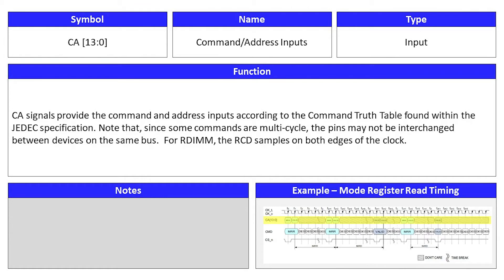Command and address inputs are an input signal and its symbol is CA. CA signals provide the command and address inputs according to the command truth table found within the JEDEC specification. Note that since some commands are multi-cycle, the pins may not be interchanged between devices on the same bus. For RDIMM, the RCD samples on both edges of the clock.